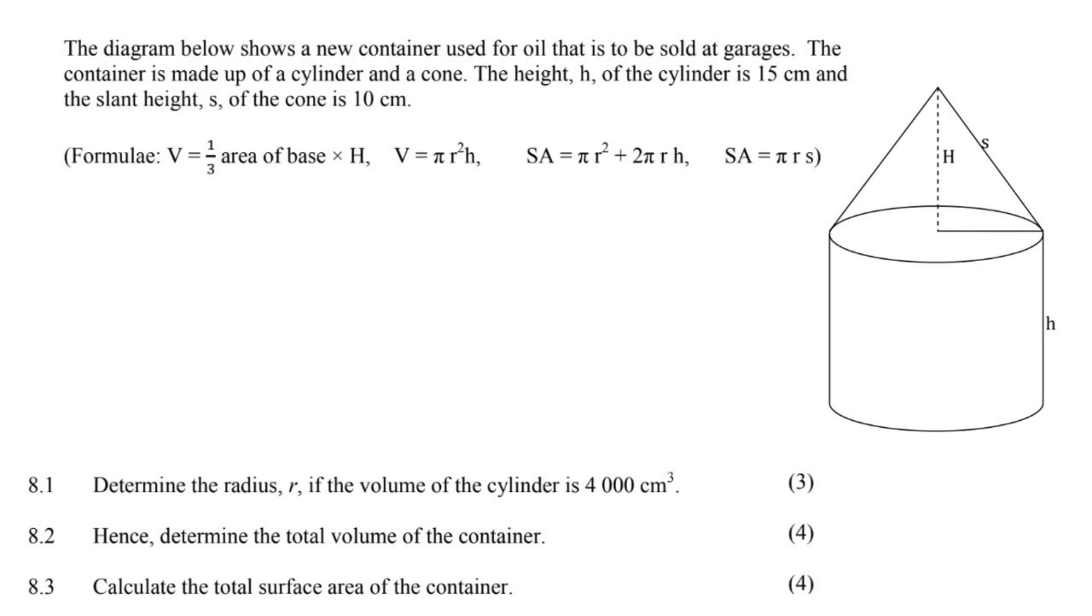The diagram below shows a new container used for oil that is going to be sold at garages. The container is made up of a cylinder and a cone. Everything they're saying is given to us, although the height h of the cylinder is 15. Well, why don't you guys just put it there then, 15.